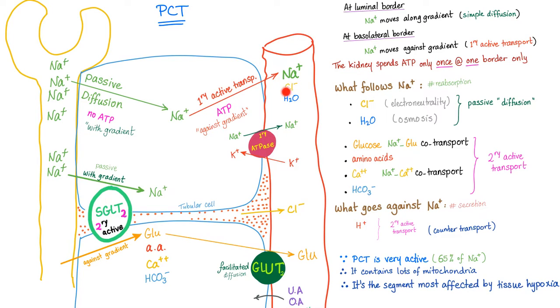What follows sodium? Chloride follows sodium. Why? Electroneutrality. By charges. Sodium is positive. Chloride is negative. They follow each other. Water. Water follows sodium by osmosis. It's called obligated water. Glucose is gonna follow sodium through the sodium glucose co-transporter, which is a secondary active transport. Amino acids, calcium, and bicarbonate. This is secondary active transport. What goes against sodium is hydrogen. So, your proximal convoluted tubule is very active. It absorbs 65% of your sodium. It contains lots of mitochondria, of course, and it's gonna be affected by tissue hypoxia because it's very active.